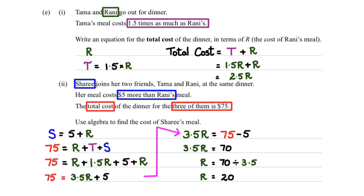Now what this tells us is Rani has spent $20 for her meal. But if you go back to the question, see there it is, right there. We need algebra to find the cost of Shari's meal. So, now we know that Shari's meal was $5 plus the amount of Rani's meal. So it would be 5 plus 20, and Shari's meal is $25.